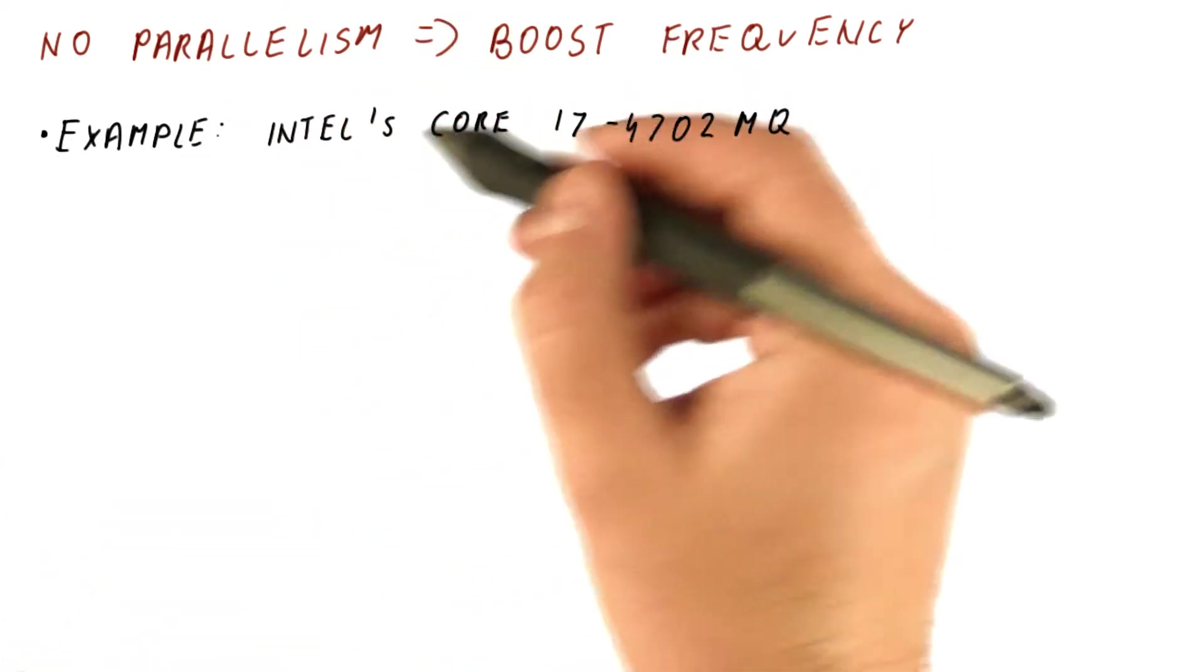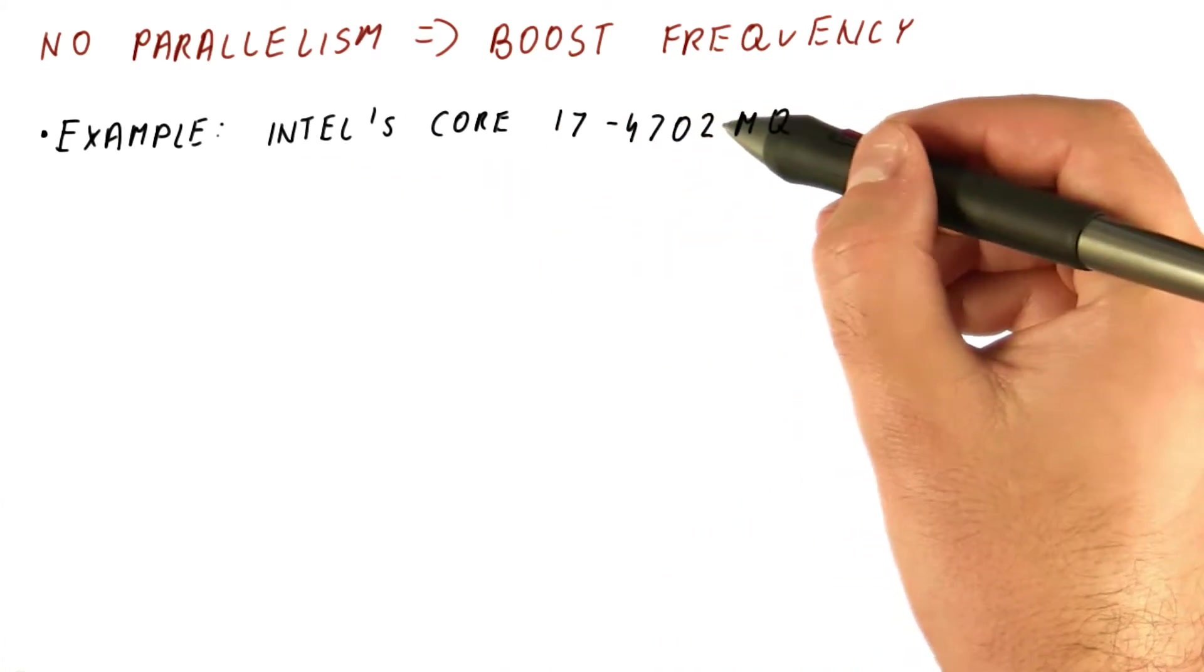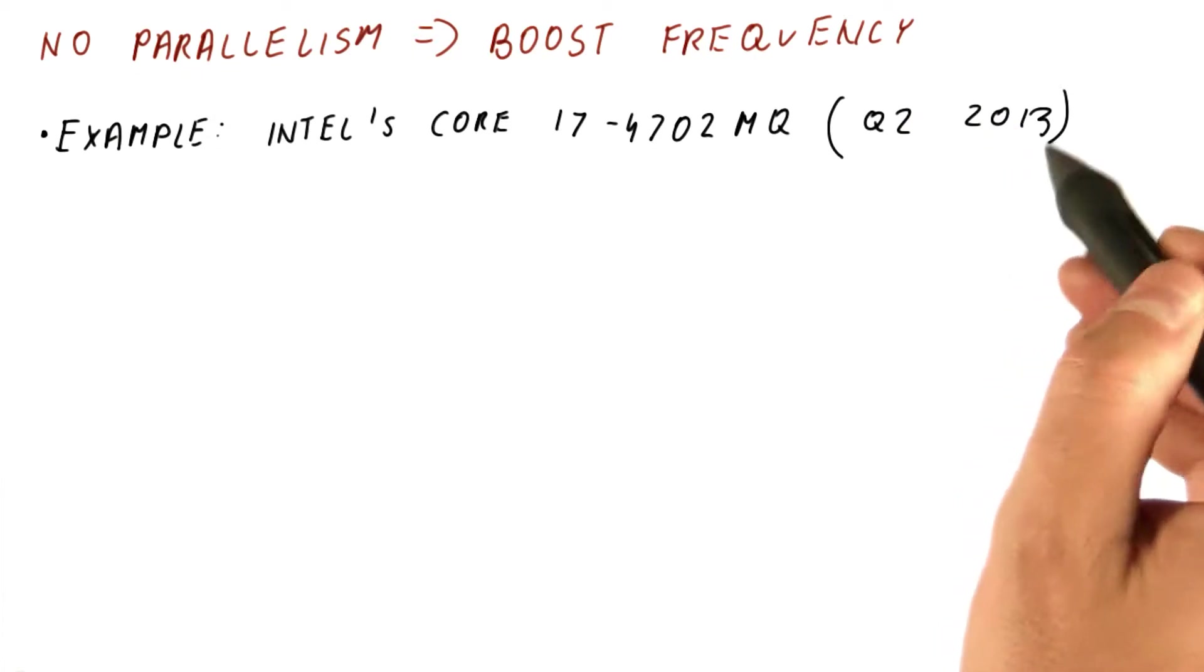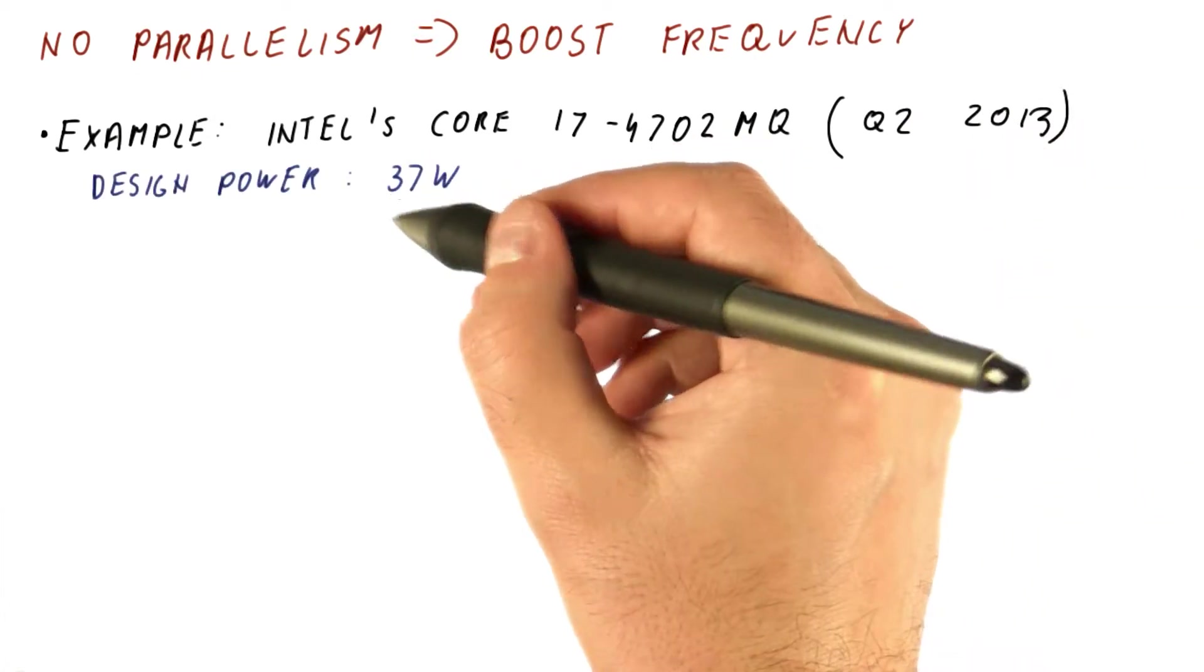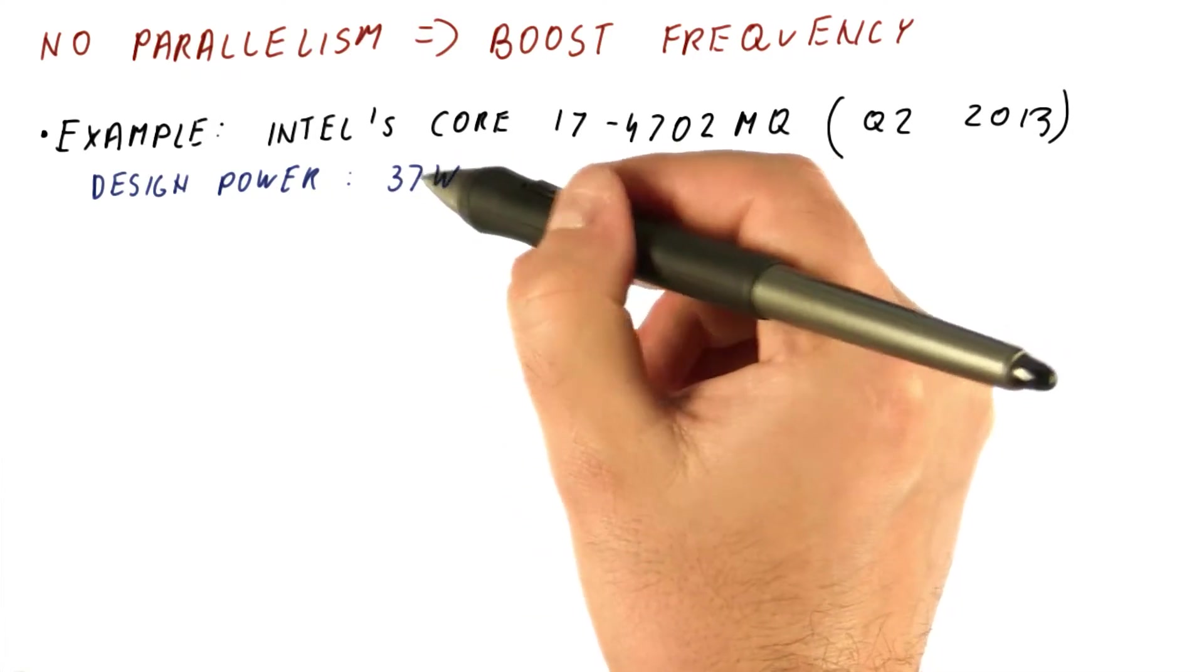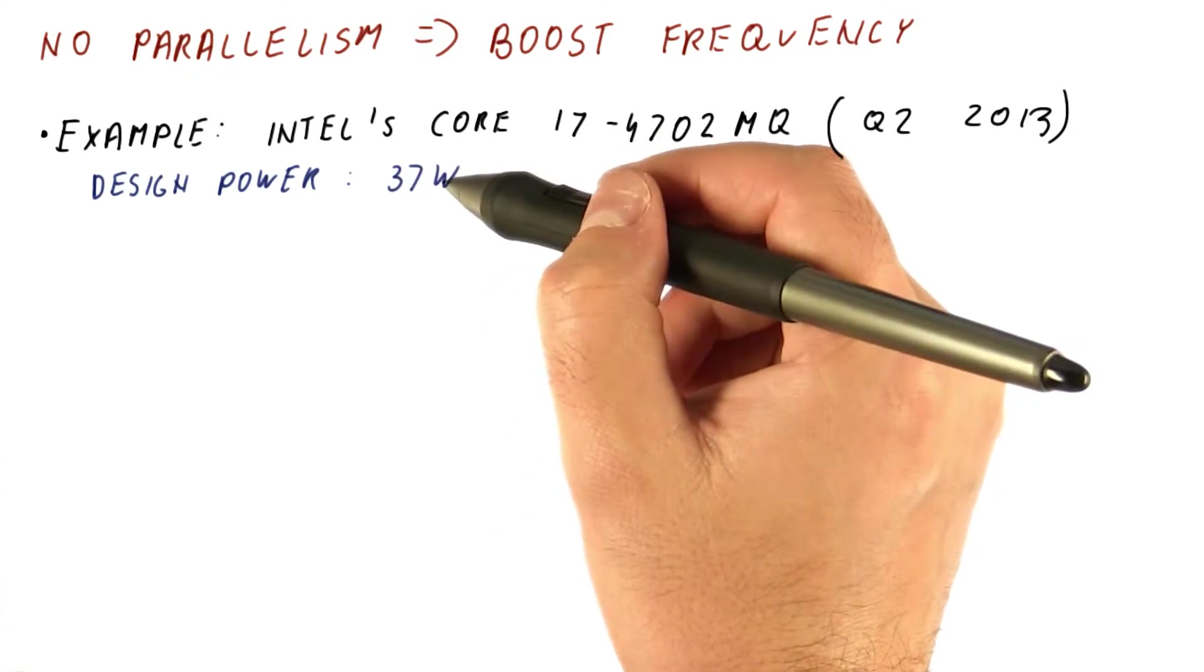Let's look at an example of Intel's Core i7-4702MQ, which was released in the second quarter of 2013. It's a mobile processor so its design power is only 37 watts. That's what we can call in a laptop apparently.